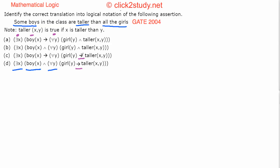Why can't we have an AND here instead of implication? What the AND version is telling you is: 'for all values of Y, girl(Y) AND taller(X, Y).' This says Y is always a girl, but that shouldn't be the case. We should say if Y is a girl, then X is taller than Y. We cannot assume that everything in the universe is a girl. That's why we eliminate the AND options — with 'for all,' you will always see implication.